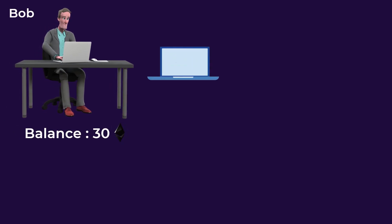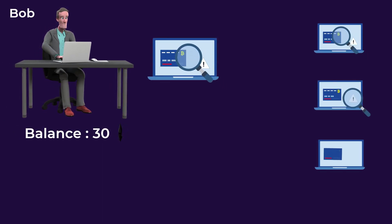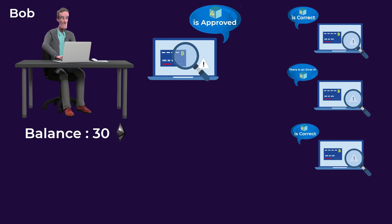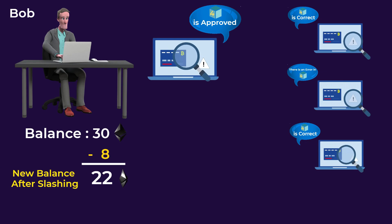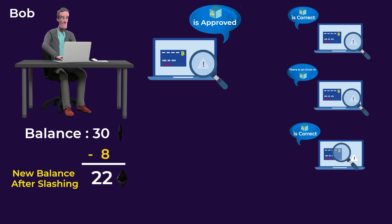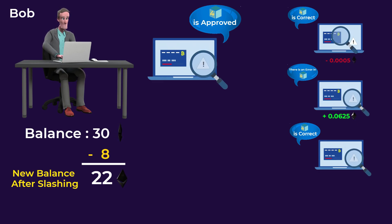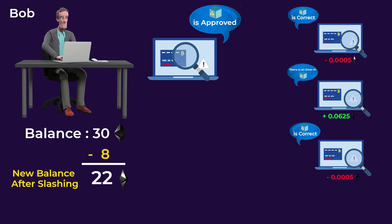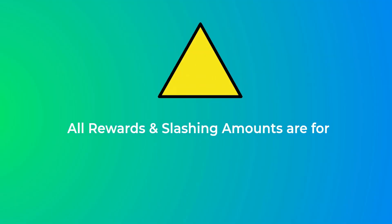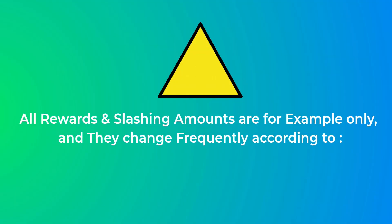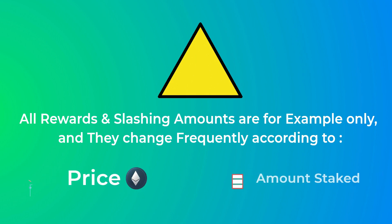In case Bob approved fraudulent transactions or made an error during the creation of the block, he gets penalized by slashing some or all of his staked crypto, or by locking up his coins and preventing him from creating new blocks for a while. Any validator who detects an error in the block created by Bob gets a very high reward from the network — approximately 0.0625 ETH. This reward is called the whistleblower reward. You can also get penalized by voting incorrectly on blocks or by going offline and missing some blocks. Keep in mind that all these reward amounts change frequently according to network conditions, such as the price of Ethereum and the total amount staked on the network.